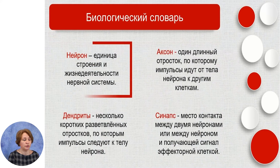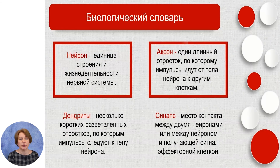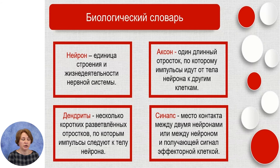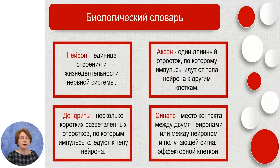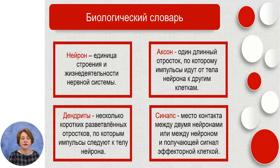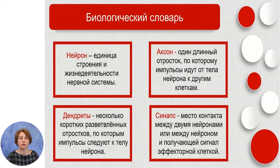Итак, в ходе урока мы узнали некоторые термины, которые нужно выучить. Нейрон – это единица строения и жизнедеятельности нервной системы. Аксон – это обычно один длинный отросток, по которому импульсы идут от тела нейрона к другим клеткам. Дендриты – это несколько коротких разветвленных отростков, по которым импульсы следуют к телу нейрона. Синапс – это место контакта между двумя нейронами или между нейроном и получающей сигнал эффекторной клеткой.